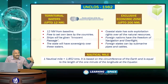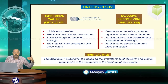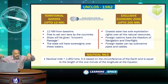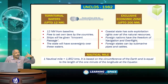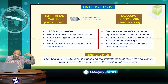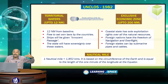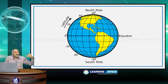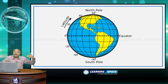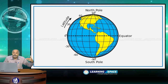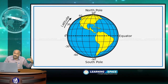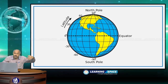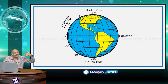Regarding the rights over oceans and seas, two important terms must be understood: territorial waters and exclusive economic zone. Territorial waters extend up to 12 nautical miles from the baseline. To understand these terms, you need a clear idea of what a nautical mile is. Looking at the globe, calculate the circumference of the Earth at the equator. There are 360 degrees of longitude in total, and each degree of longitude can be divided into 60 minutes.